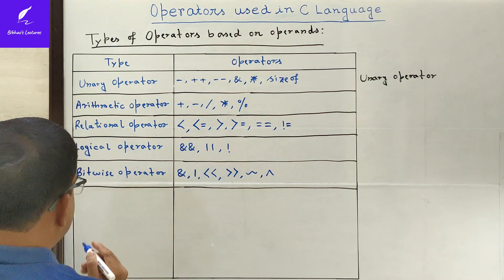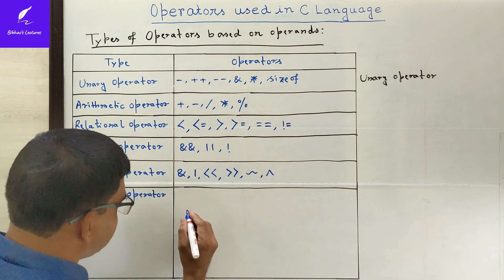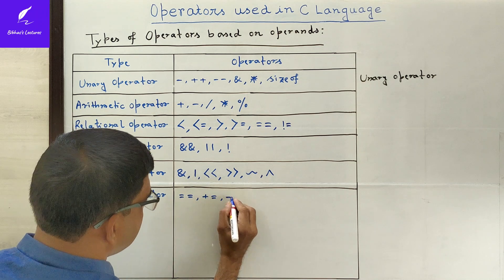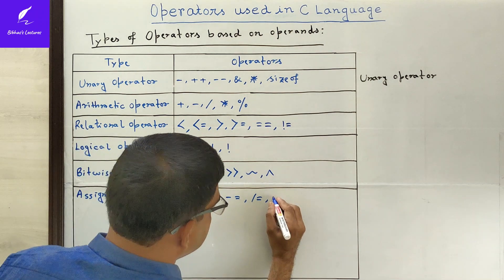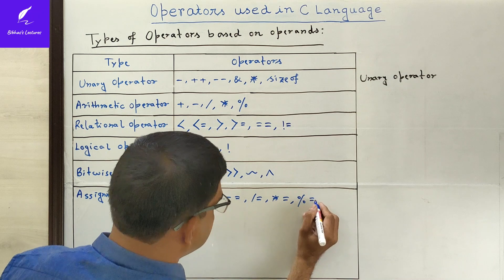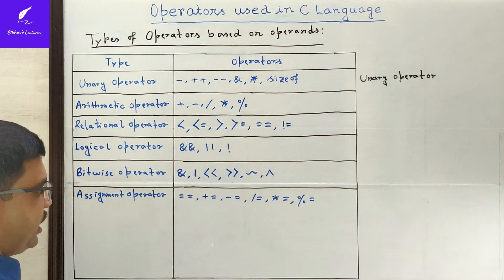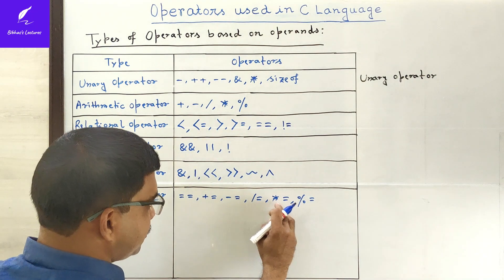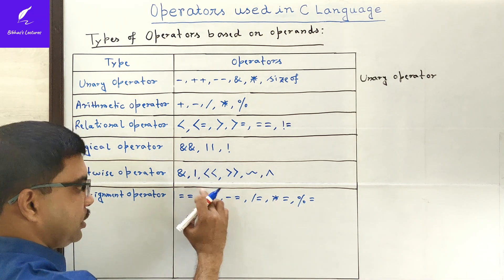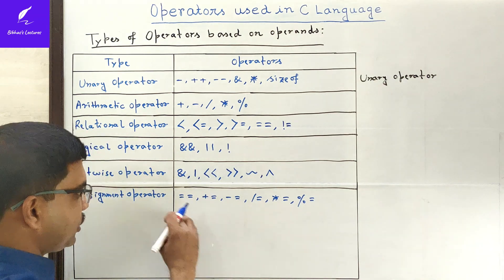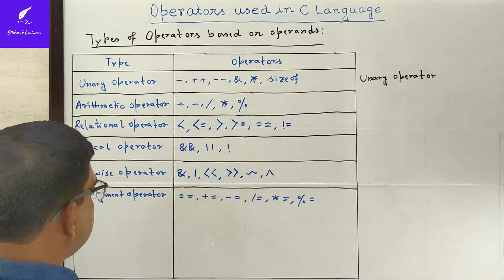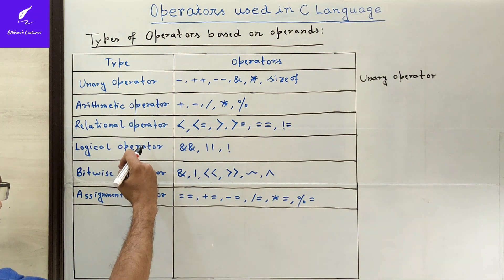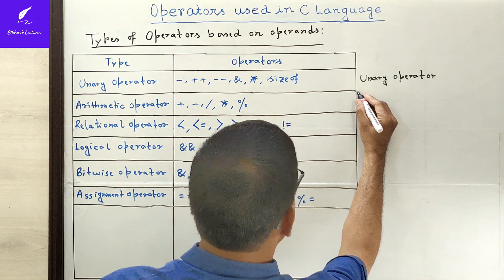The next binary operator type is the assignment operator. Examples are: equals (=), plus-equals (+=), minus-equals (-=), division-equals (/=), multiplication-equals (*=), and modulo-division-equals (%=). The operators +=, -=, /=, *=, and %= are called shorthand assignment operators. So six types of assignment operators are used. Arithmetic, relational, logical, bitwise, and assignment operators are all examples of binary operators.